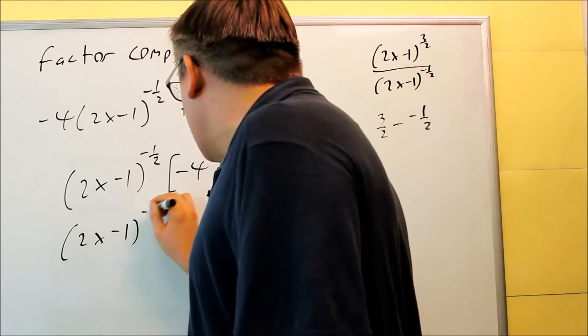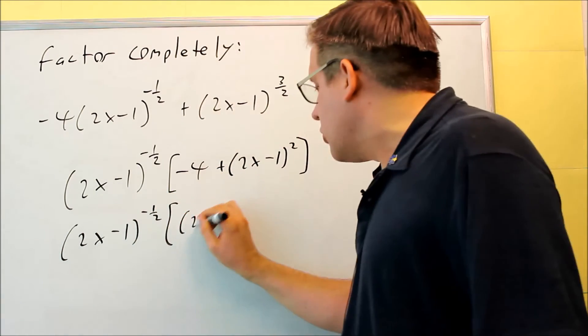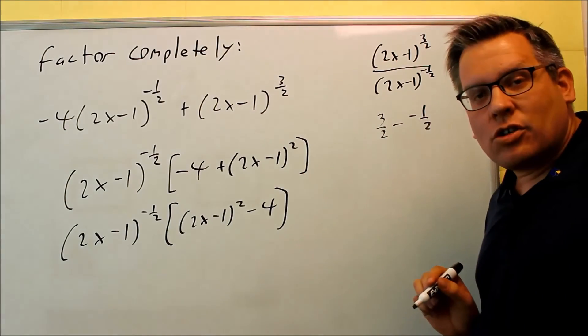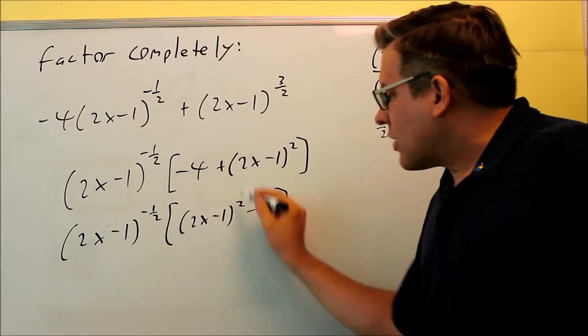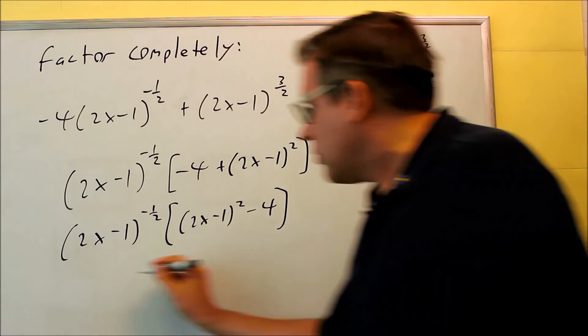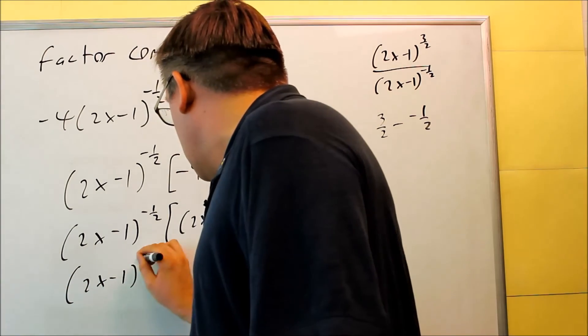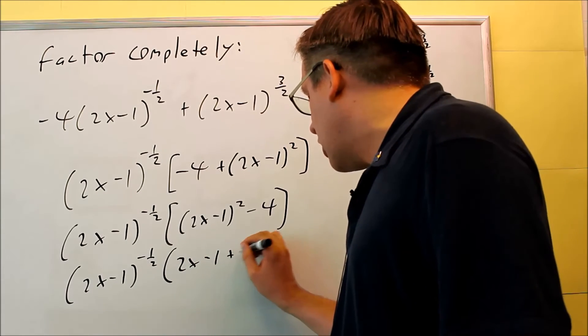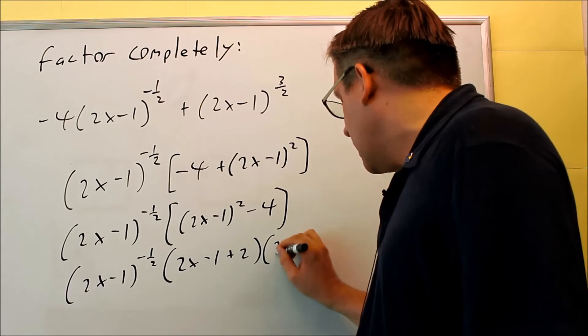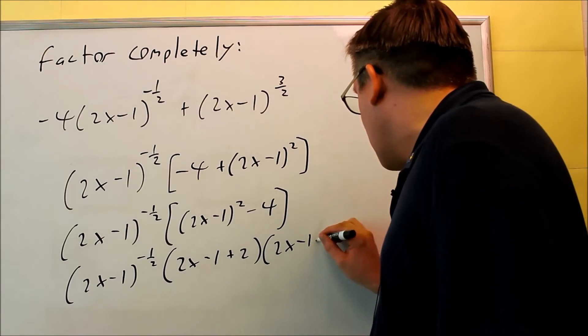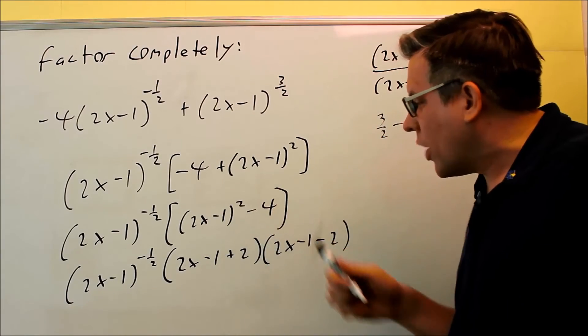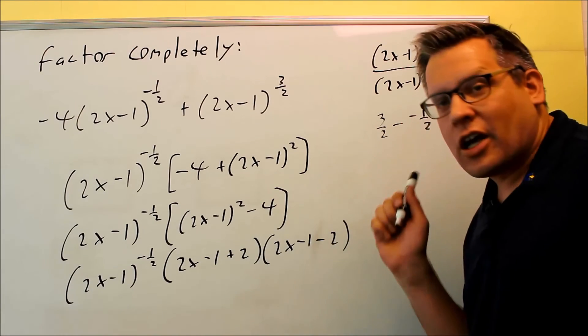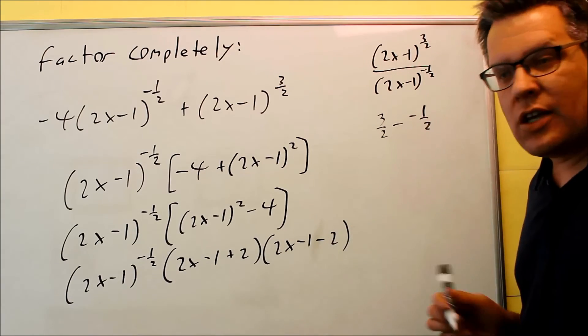So what I mean by that is you could do 2x minus 1 squared minus 4, and then this is something that you can actually use difference of squares on, because we've got something squared here, and this number is also squared. So what that will look like is you can do inside here 2x minus 1 plus 2, 2x minus 1, and then minus 2. So again, it's a difference of squares here, plus 2 and minus 2 because of the 4 right there. So you could either expand it out like I did in the notes, or this way might be a little bit easier.